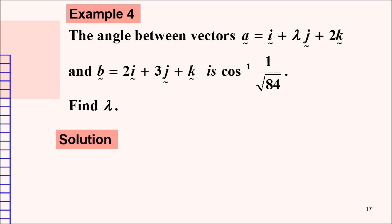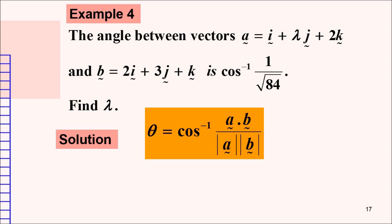The solution: first, recall back our formula for the angle between vectors. We have that θ is equal to inverse cos of the dot product of a and b divided by magnitude a times magnitude b.